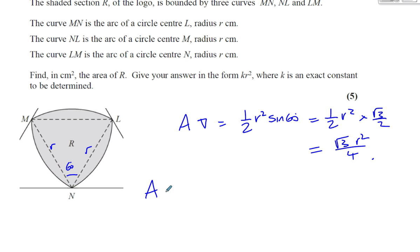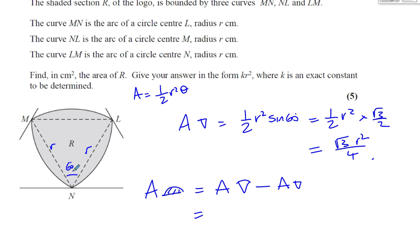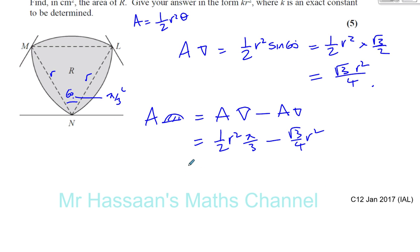Now let's look at the area of one segment. The area of a segment equals the area of the sector minus the area of the triangle. The area of the sector in radians is half R squared theta. Since 60 degrees equals pi over 3 radians, the area of the sector is half R squared times pi over 3. So the segment area is pi R squared over 6 minus root 3 over 4 R squared.